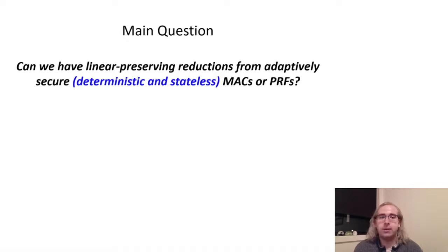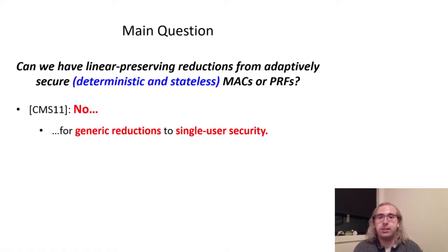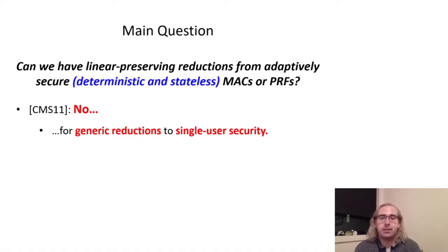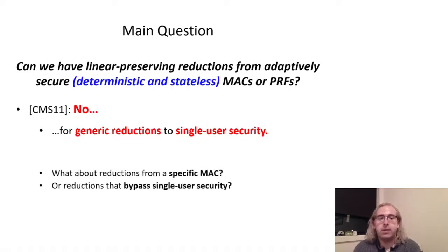So, narrowing down to the most practically relevant notion of deterministic and stateless MACs, we can ask our question again. And this time, in contrast to Badr et al., the earlier work of Chatterjee et al. suggests a negative answer to this question, ruling out generic black box reductions — that is, reductions that apply to any MAC — from adaptive multi-user security to single-user security of MACs. But this still leaves open both the question of whether we can find a reduction for a specific MAC, and the question of whether we can bypass single-user security and base adaptive multi-user security on standard reductions directly.